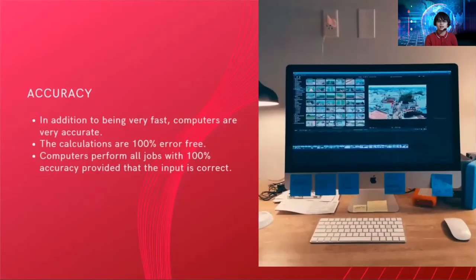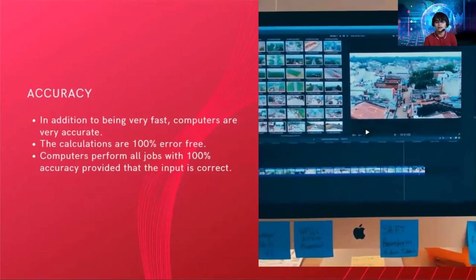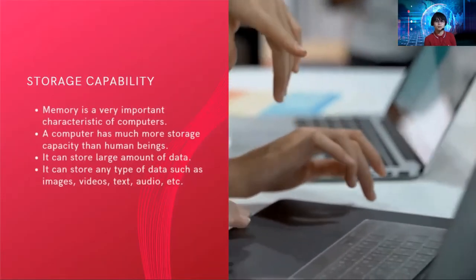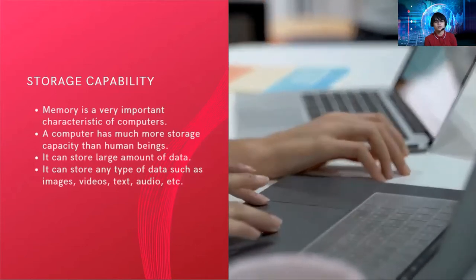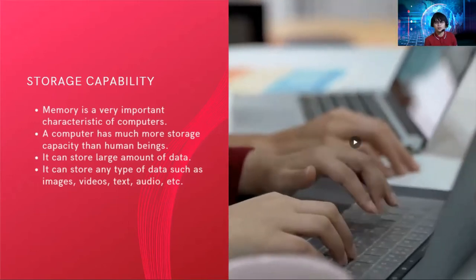Next is accuracy. Computers are very accurate — calculations are 100% error-free. A computer performs all jobs with 100% accuracy, provided that the input is correct. If your instructions to a computer are correct, it will give you a correct output; but if your instructions are vague or invalid, it will give you an invalid result. Next is storage capability. Memory is a very important characteristic of computers. A computer has much more storage capacity than human beings and can store images, videos, text, and audio.